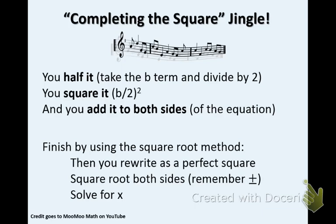What does this mean? Well, the first thing that you do is you take the b term and you divide by 2. That's what it means to half it. Then you take that value and you square it. And then the last thing that you have to do is add that number to both sides of the equation. The reason why you do this is because you must keep the equation equal on both sides. It's like a balanced scale. If you do it to one side, you must do it to the other.